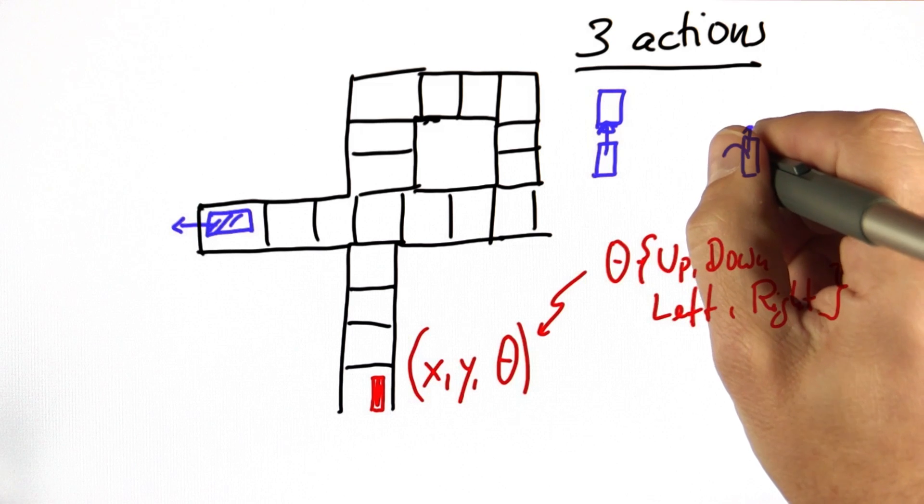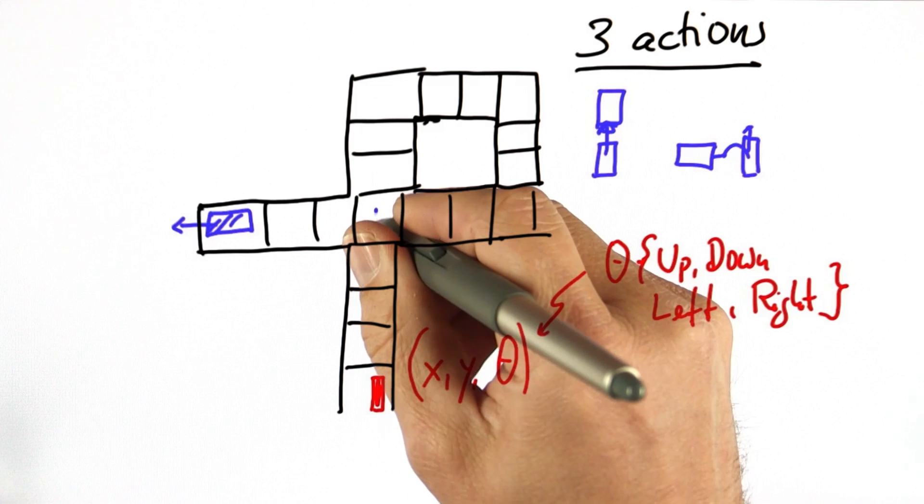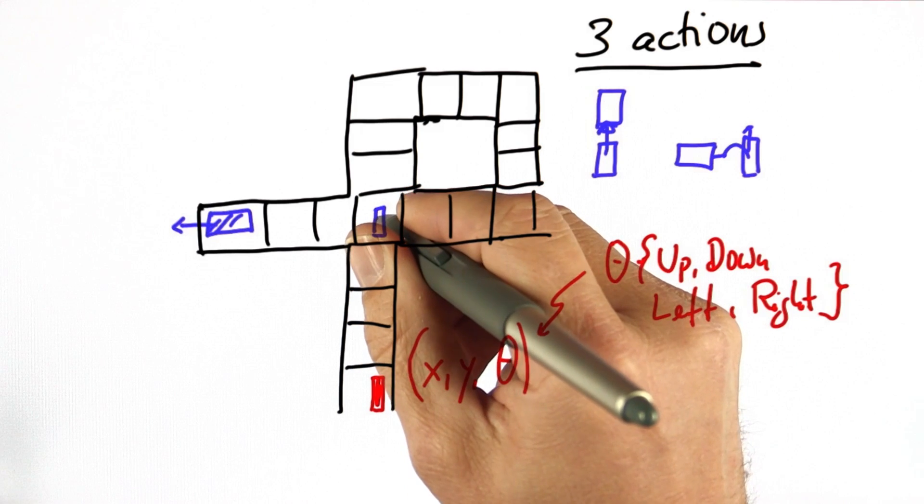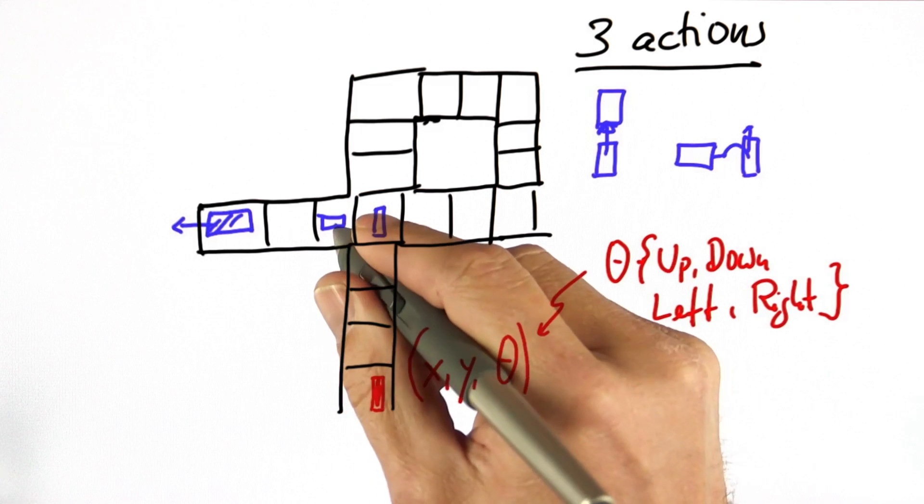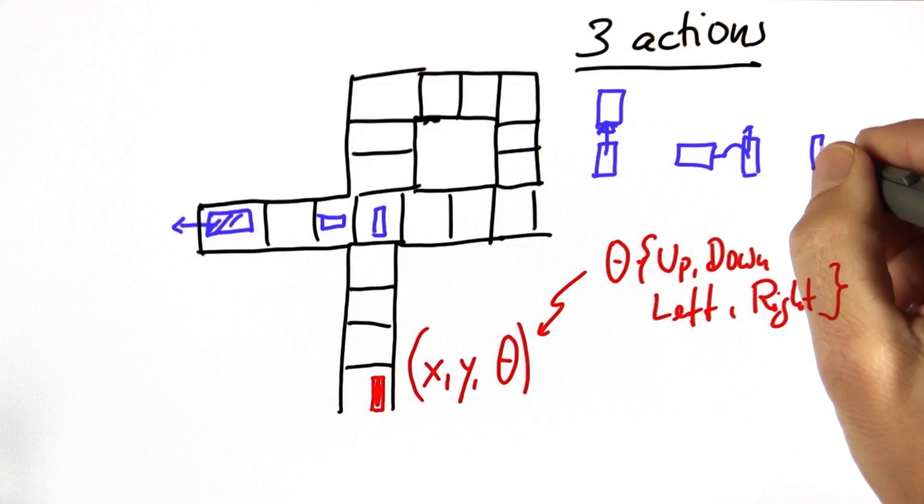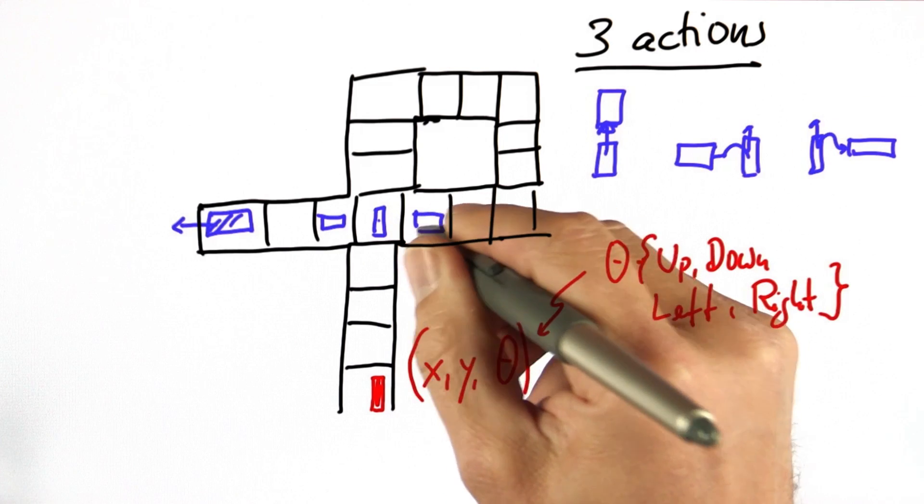One is turn left and then move. So this car, when positioned in the cell over here, could choose turn left and move, which makes it move over here. And the last one is turn right and move, in which case it would, from this cell over here, turn and head in this direction.